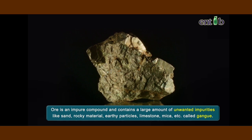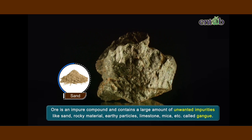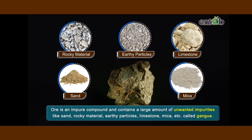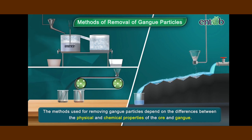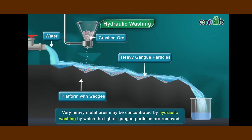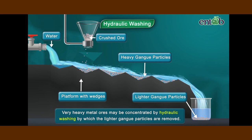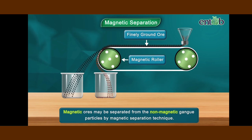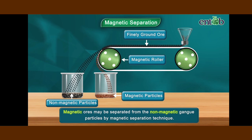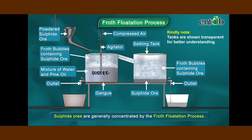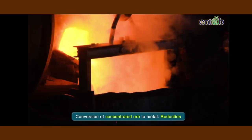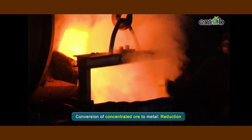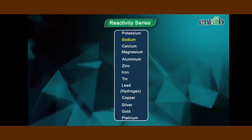Ore is an impure compound and contains a large amount of unwanted impurities like sand, rocky material, earthy particles, limestone, mica, etc., called gangue. The methods used for removing gangue particles depend on the differences between the physical and chemical properties of the ore and gangue. Very heavy metal ores may be concentrated by hydraulic washing, by which the lighter gangue particles are removed. Magnetic ores may be separated from the non-magnetic gangue particles by the magnetic separation technique. Sulphide ores are generally concentrated by the froth flotation process. After the concentration of ore, the next step is the conversion of concentrated ore into metals, which is essentially a process of reduction. The method of reduction to be used depends upon the reactivity of the metals to be extracted.